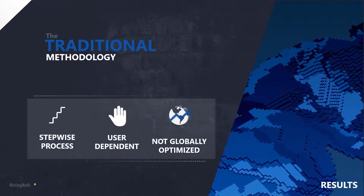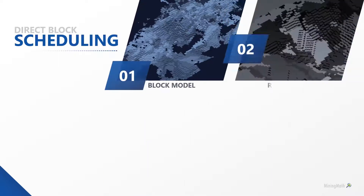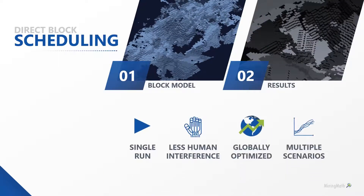Even if all steps are well executed by an experienced professional, it's not an overall optimized process. Through the one-step optimization approach, the planner optimizes with a more global view, more likely to find higher NPV, leading to results that better comply with reality. This new approach, based on mixed integer linear programming and heuristics, is able to respect the same constraints required in the traditional methodology.